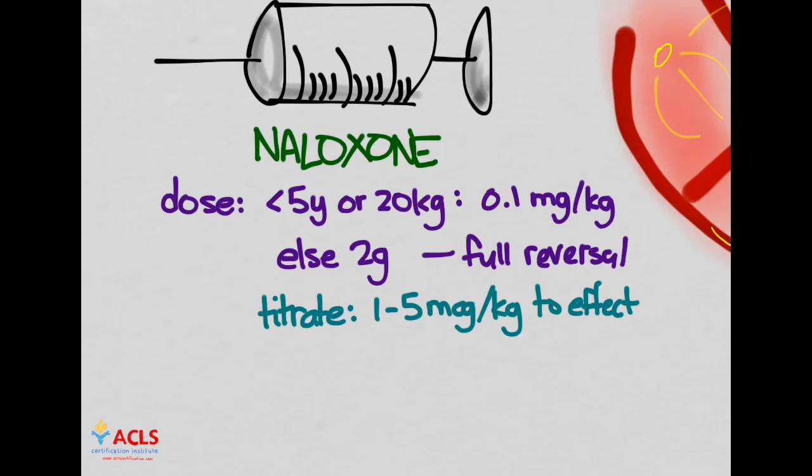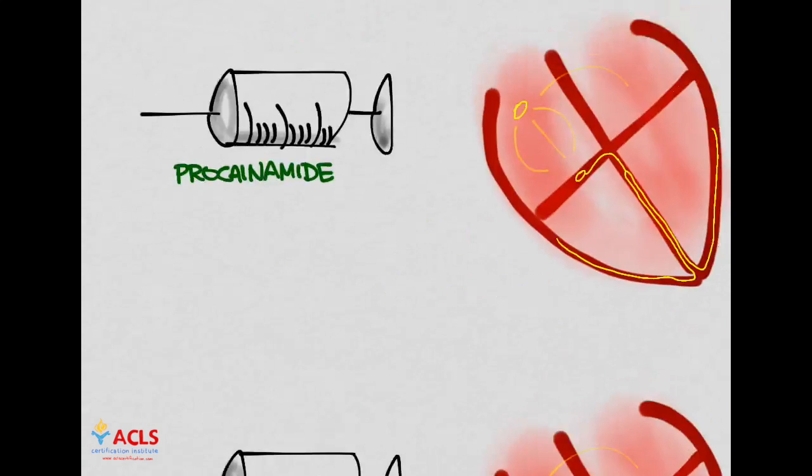The next medication is procainamide. Procainamide prolongs the refractory period in the atria and ventricles. It also depresses conduction velocity. There's not a lot of data on use in infants and kids, so we're extrapolating from adults. The dose is 15 mg per kg over 30 to 60 minutes. We give it slowly because it can cause heart block and hypotension.